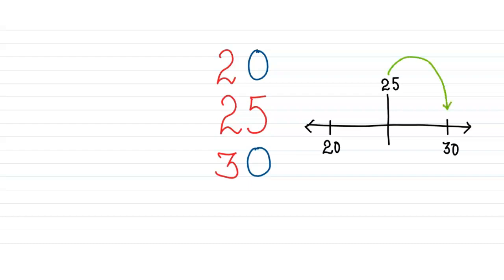That means we are going to round it off to 30. So 25 gets rounded off to 30.